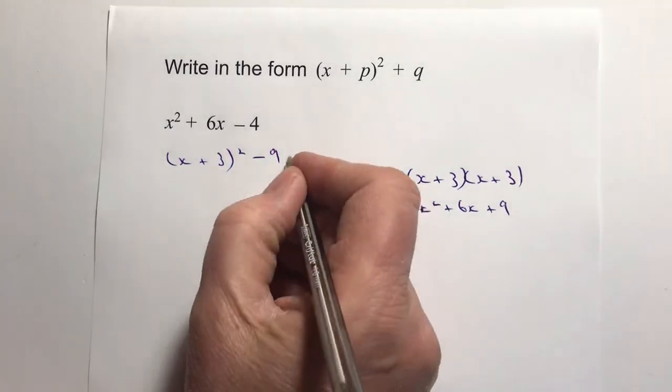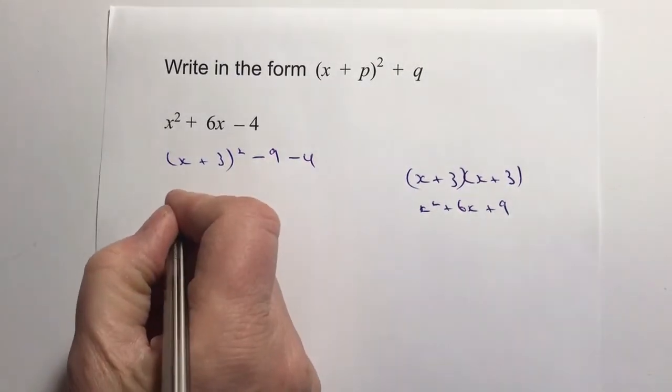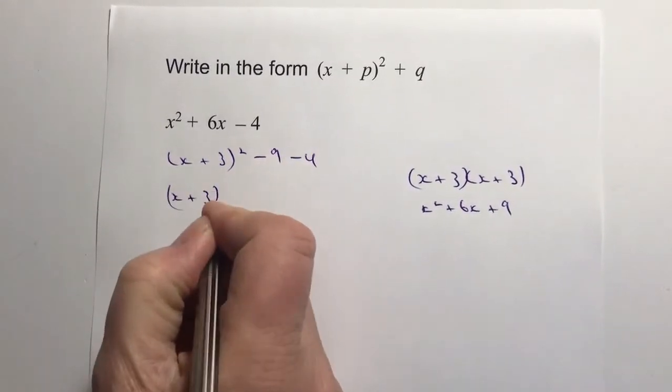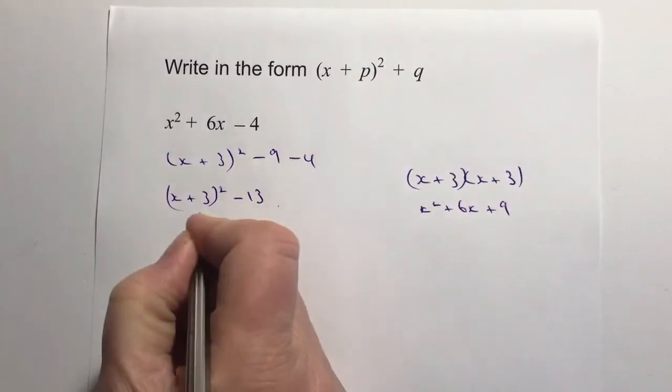And then the final thing I've got to do is I've got that minus 4. So if I take minus 4 at the end of it, it's then just a case of tidying this up.